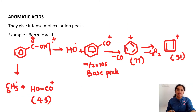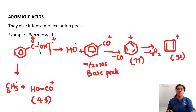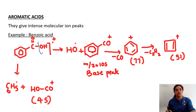The next category is aromatic acids. Here, OH is converted into OH dot and the remaining CO+ is obtained. From there, CO is eliminated to give a phenyl carbocation at m/z = 77, which then converts into a cyclobutadienyl carbocation at m/z = 51. The base peak is at m/z = 105.